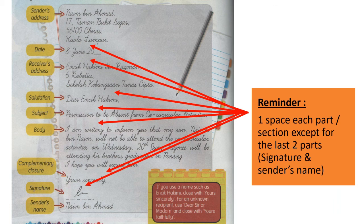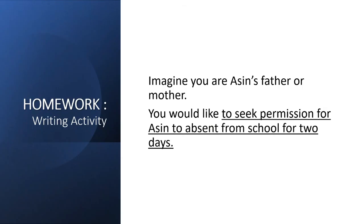Reminder to all: make sure you leave one space for each part or section, except for the last two parts — signature and the sender's name — no need to leave a space. But for the rest, make sure you leave a bit of a gap. For today's writing activity, you need to write a short and sweet formal letter. Imagine you are a parent and you would like to seek permission for your child to be absent from school. The subject would be: 'Permission to be absent from school.' That's it — a very short, sweet, and simple subject.